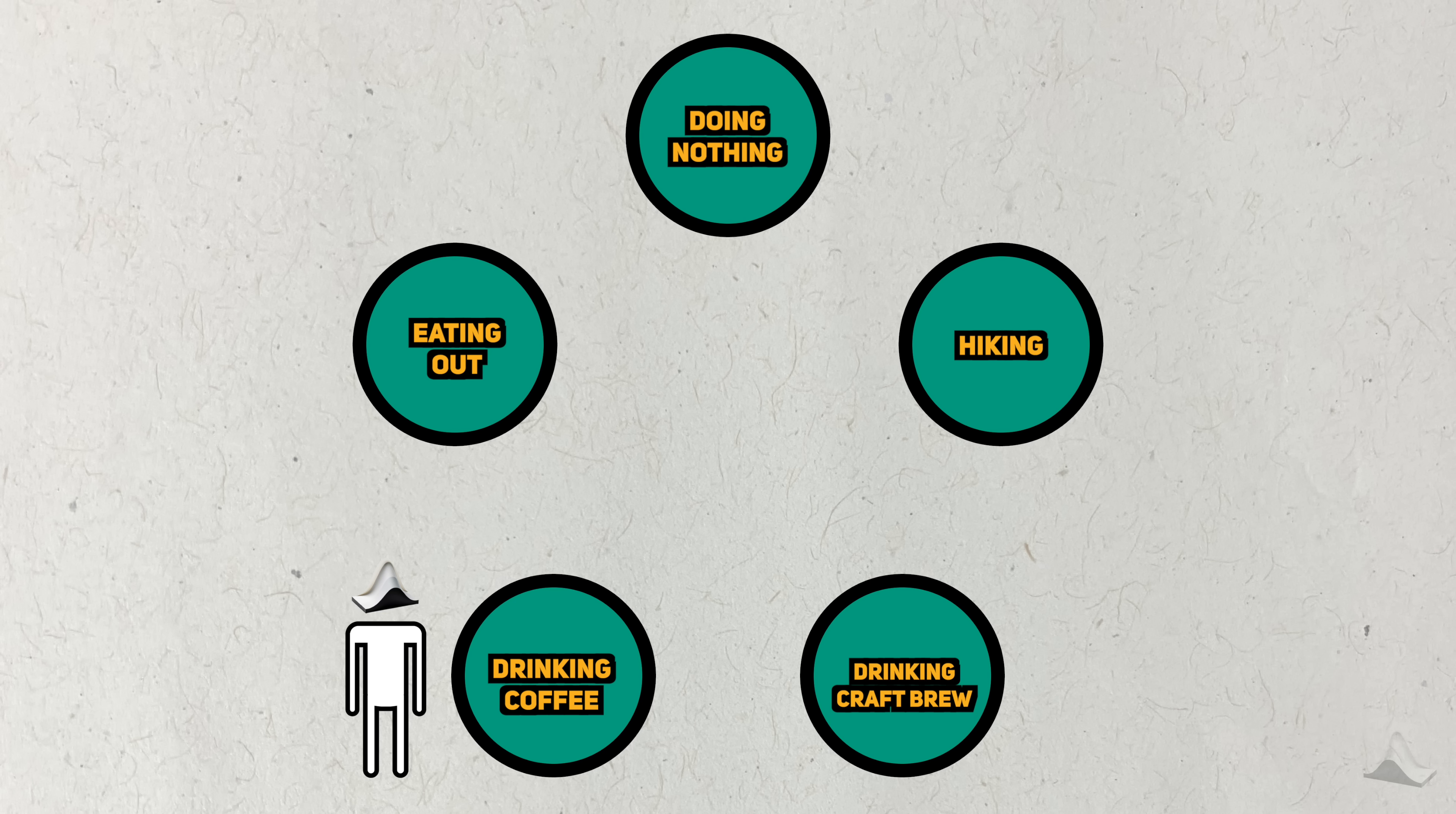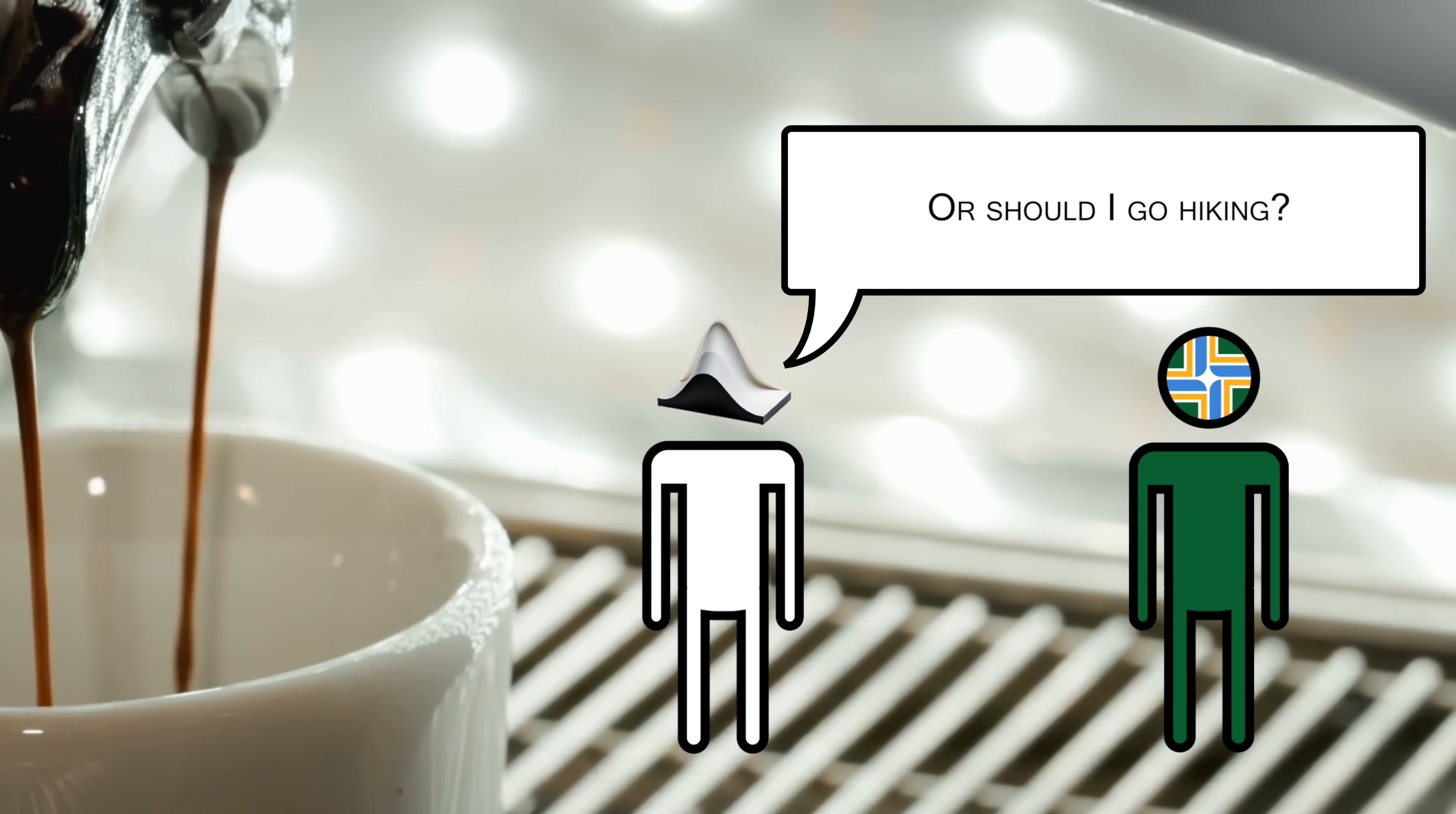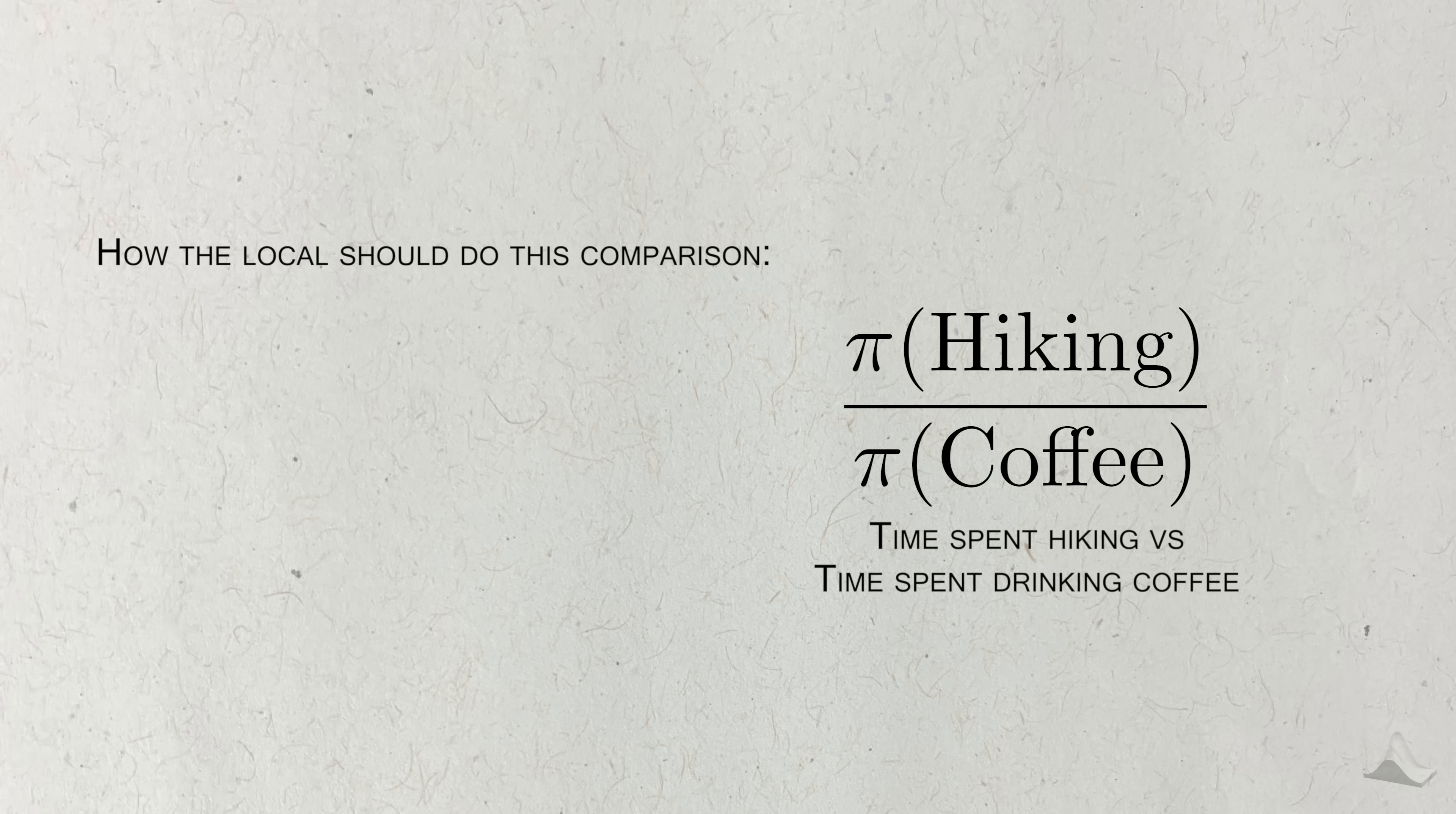Rather than consult Instagram or go where the wind tells me, the Metropolis algorithm says that I should choose my next activity at random. After asking my favorite random number generator, it picks hiking for me. But I don't go immediately hiking. The Metropolis algorithm says I need to ask a local to compare what I'm doing now to what I propose to do next. Even though the average Portlander won't know my target distribution, it's easier to pick between two options, drinking coffee versus going hiking.